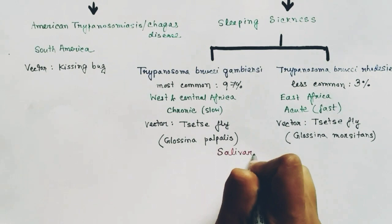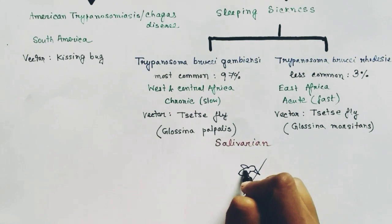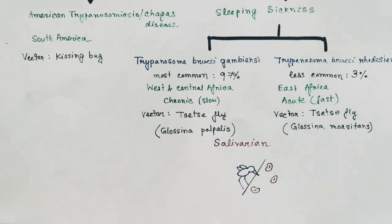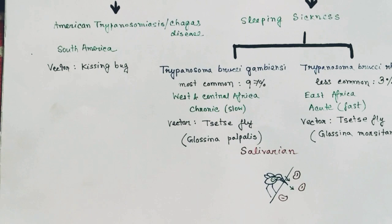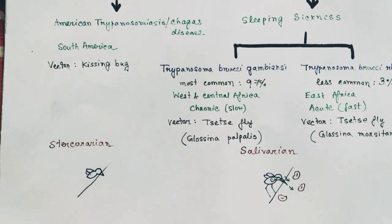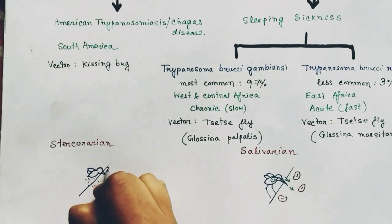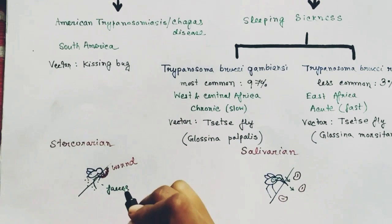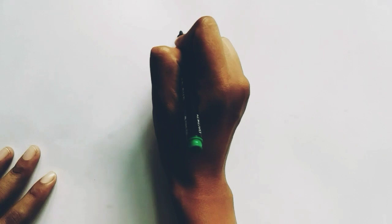In this video we are going to talk about the life cycle of Trypanosoma brucei gambiense. In the case of T. brucei, transmission is salivarian — when the fly sucks blood, it transfers the parasite through saliva. In the case of T. cruzi, it is stercorarian — the vector sucks blood, creates a wound, and releases the parasite through feces, which contaminate the wound and allow the parasite to enter the body.